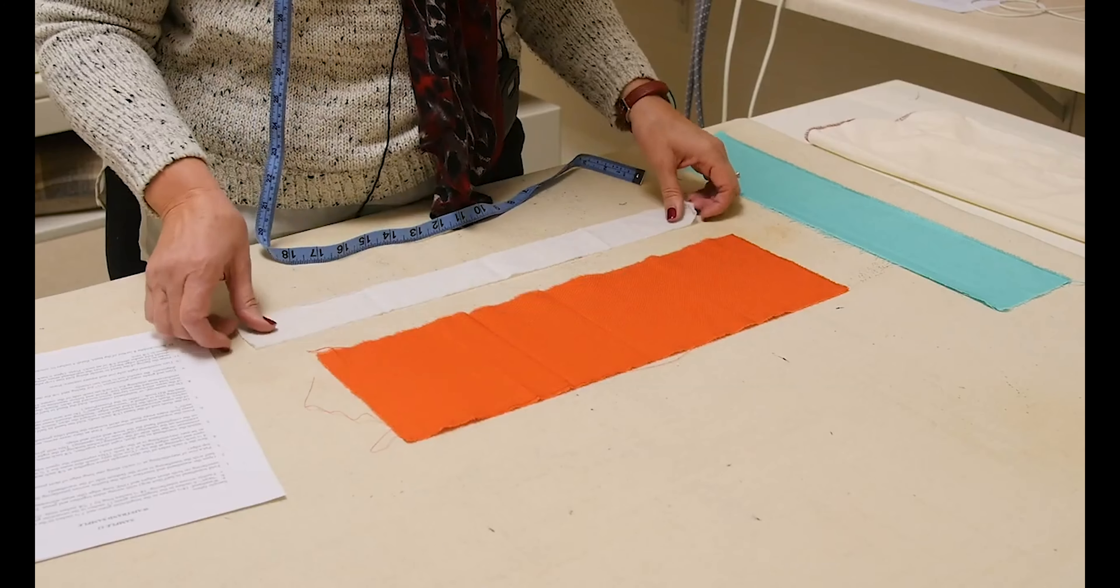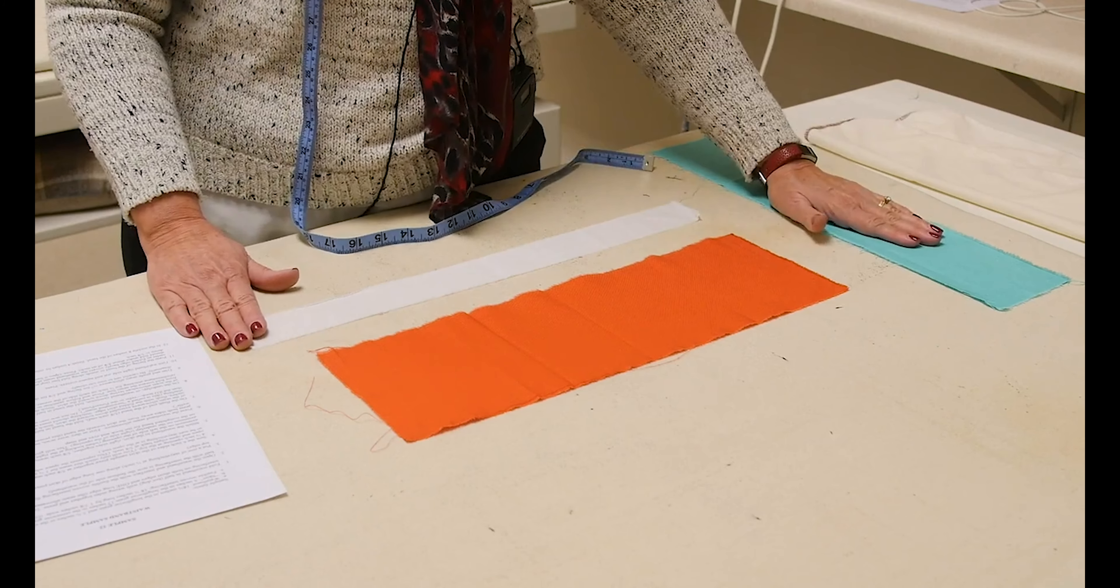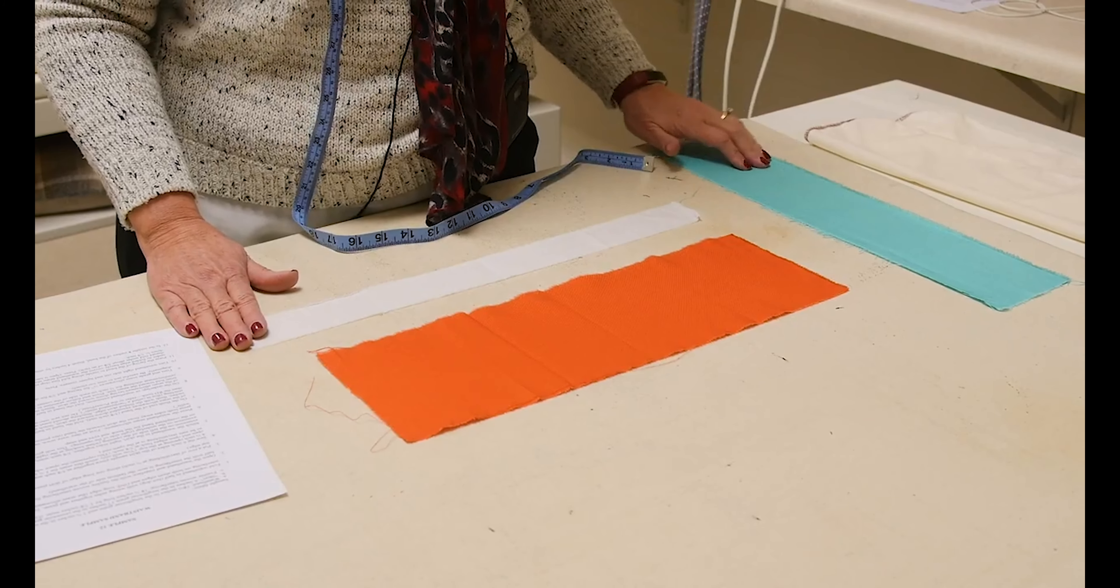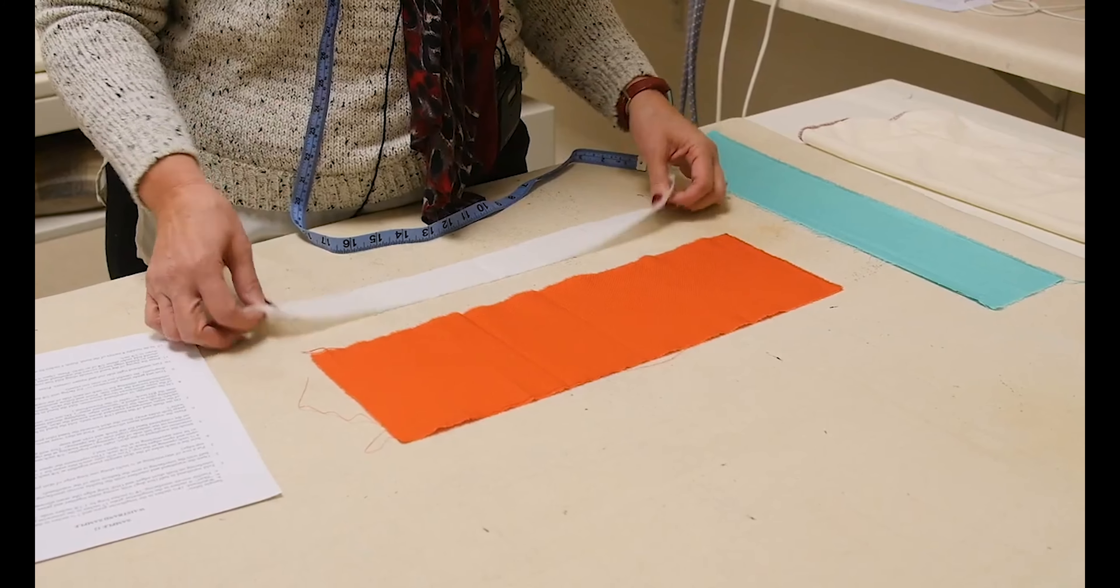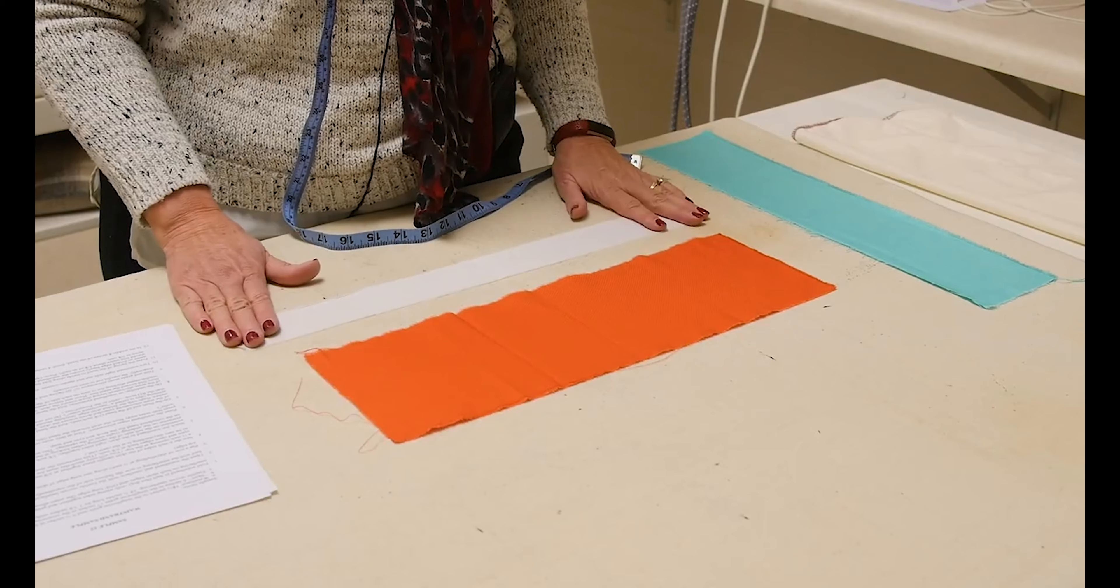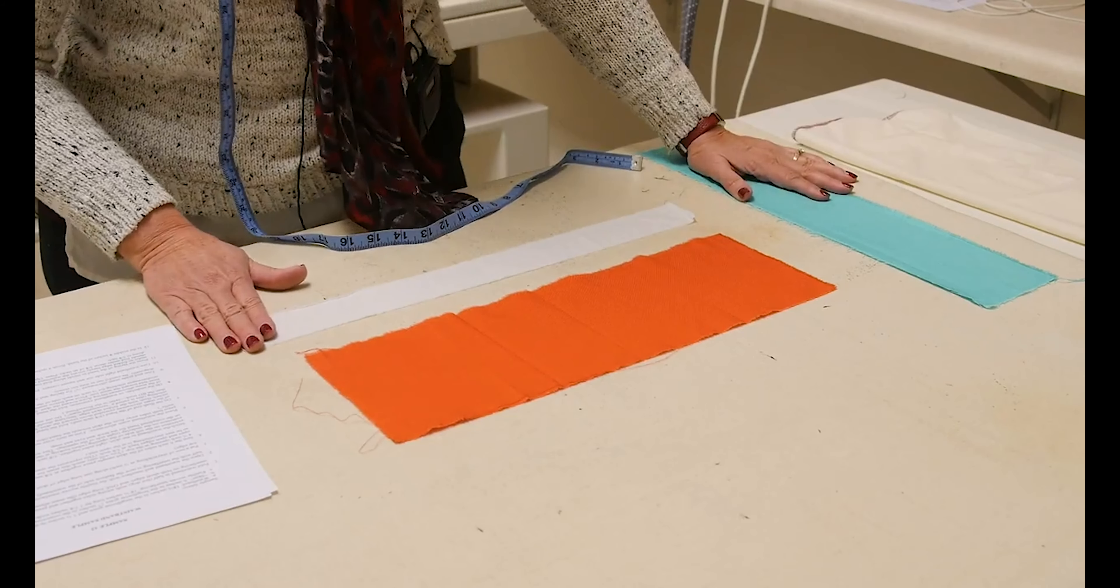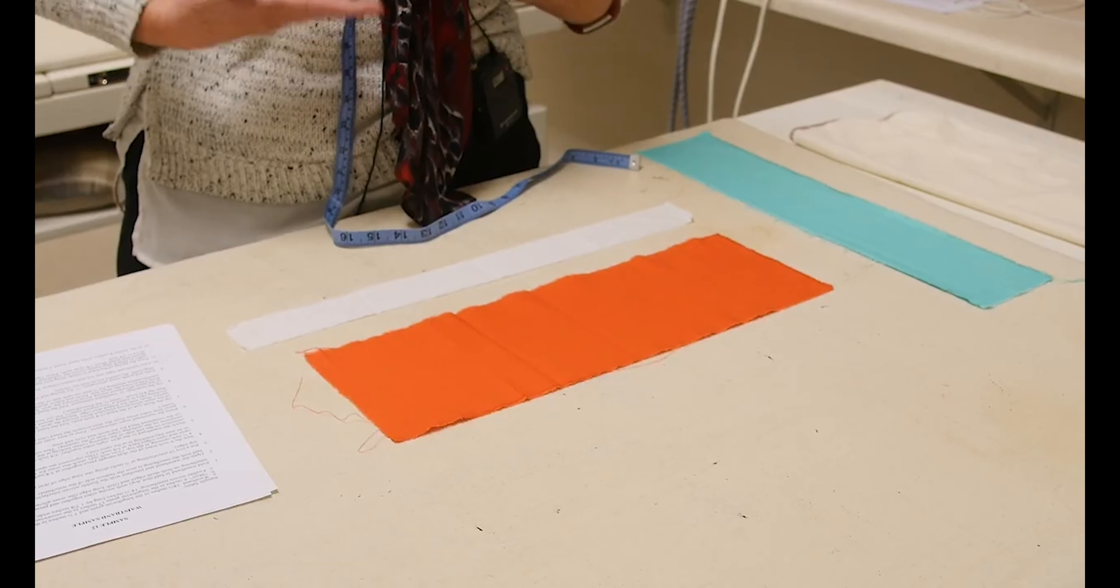Okay, now we also need a piece of fusible woven interfacing. Because we want our band to be very supportive and to be able to stand up on our body, we're going to use fusible woven interfacing. Now the thing about a waistband is that a waistband starts at your waist and then it goes up from there.